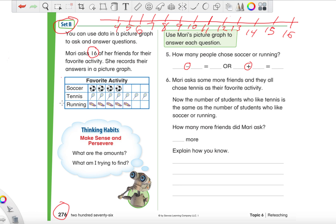We're on Set B here on page 276. Now we have this chart over here that's about soccer, tennis, running, and a bunch of friends voted on which one was their favorite. So let's read this whole story here. I recircled the important number and I made a number line up top to get us ready. Let's read it together. Mari asked 16 of her friends for their favorite activity and she recorded their answers in a picture graph.